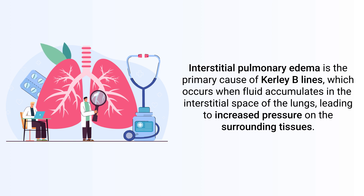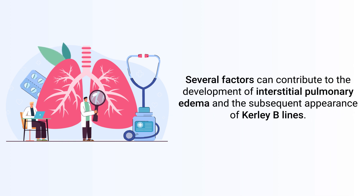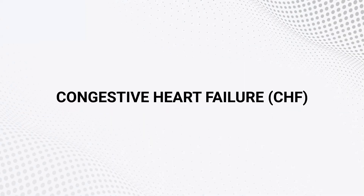As previously mentioned, interstitial pulmonary edema is the primary cause of Kerley B lines, which occurs when fluid accumulates in the interstitial space of the lungs, leading to increased pressure on the surrounding tissues. Several factors can contribute to the development of interstitial pulmonary edema and the subsequent appearance of Kerley B lines.